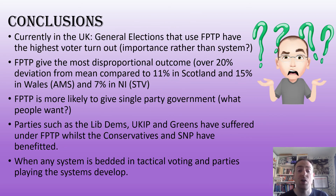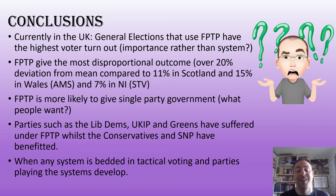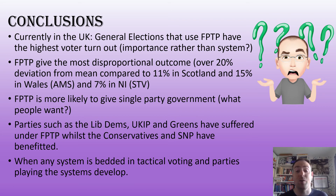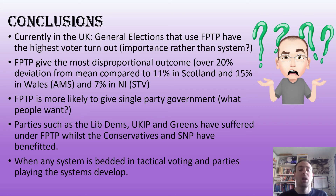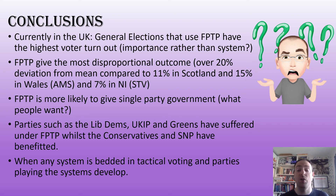In conclusion: UK general elections currently use first past the post, which has the highest voter turnout — though some would argue this shows greater voter engagement. I would counter that general elections are simply the most important elections, which is why people turn out more. FPTP also produces the most disproportional outcome: over 20 percent deviation from the mean, compared to 11 percent in Scotland and 15 percent in Wales — both using AMS — and just 7 percent in Northern Ireland using STV. FPTP is the most likely system to produce single-party government, though recent elections have partially debunked the old argument that it always does.